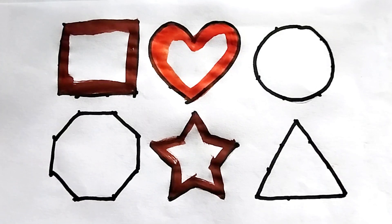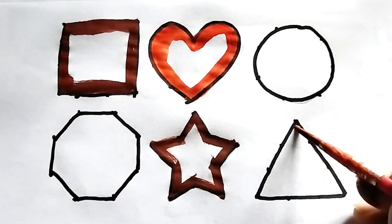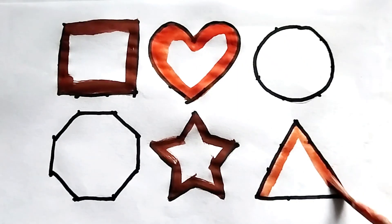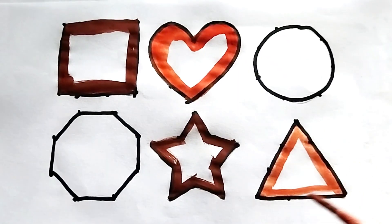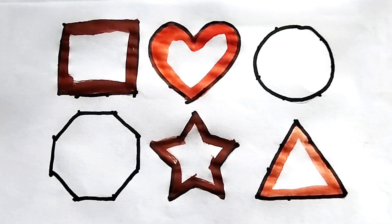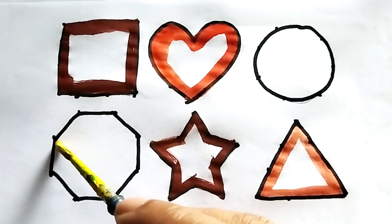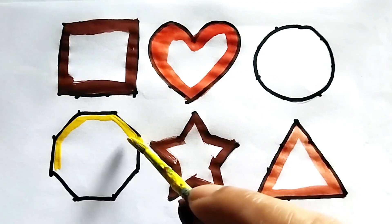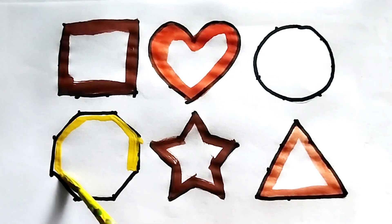This is triangle, triangle. This is triangle. This is yellow color, yellow color, yellow color. One, two, three, four, five, six, seven, eight. This is octagon, octagon.